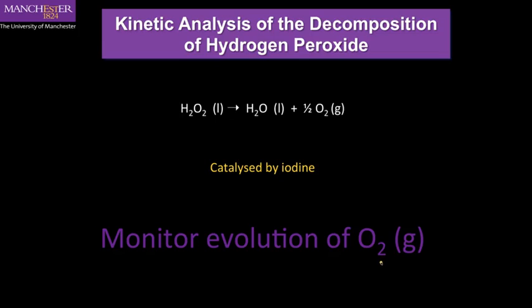So we're going to perform this reaction and you're going to take some measurements. When we've taken the measurements, I'll tell you how to analyse the data and then you can go away and do that. From the analysis you should be able to get both the order of the reaction and also the rate constant for the reaction. So let's have a look at the experiment in practice.